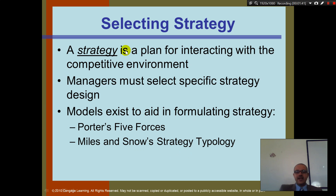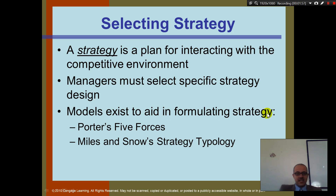Selecting a strategy — a strategy is a plan for integrating with a competitive environment. Every time we talk about strategy we need to look at the environment. Managers must select a specific strategy design, and there are models that exist to aid in formulating strategies, like Porter's Five Forces and Miles and Snow's strategy typologies. Have you guys heard of Porter's Five Forces?